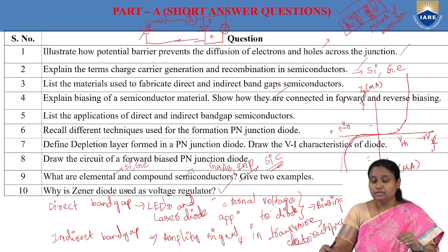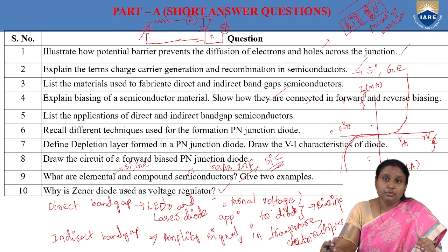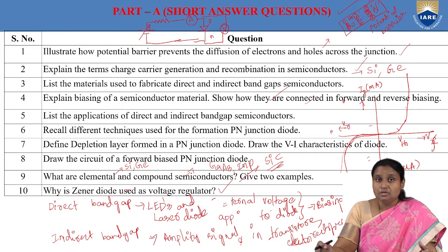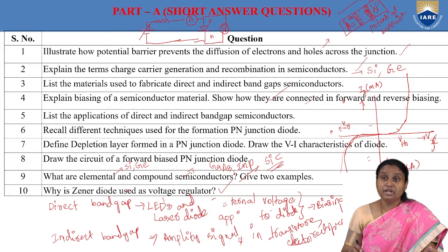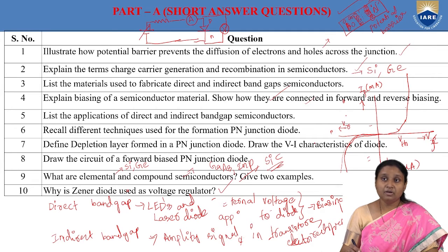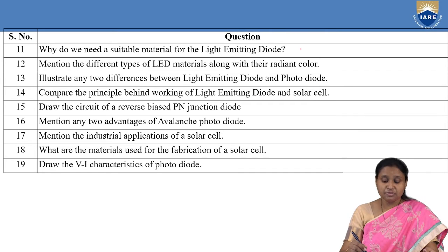Why is a Zener diode used as a voltage regulator? No matter what fluctuations occur in input voltage, the output voltage from the Zener diode is constant. In a Zener diode, there is a condition called Zener breakdown. In a normal diode at high reverse bias voltage, covalent bonds break and there is a rise in current. But in a Zener diode, Zener breakdown occurs at a very small reverse bias voltage without damaging the device — there is a large current flowing. This property is used in voltage regulation.